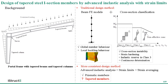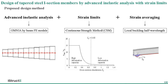However, as shown in the right figure, this approach does not allow for harnessing partial plasticity in stocky cross-sections, and also generates artificial steps in the determination of capacity. To overcome these drawbacks, a more consistent design method has been developed, which involves advanced elastic analysis, strain limits, and strain averaging approach. This method has been verified on prismatic members but has not covered tapered members. So the objective of this study is to extend this design method to also cover in-plane, web-tapered I-section members.